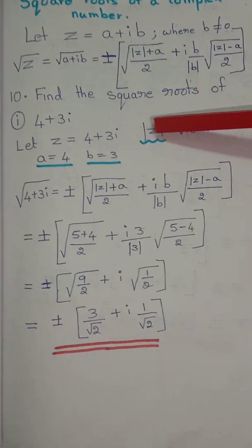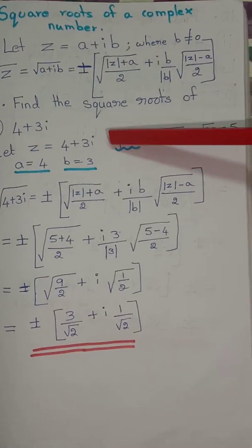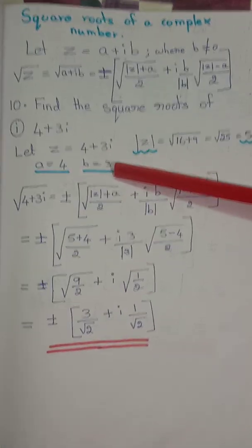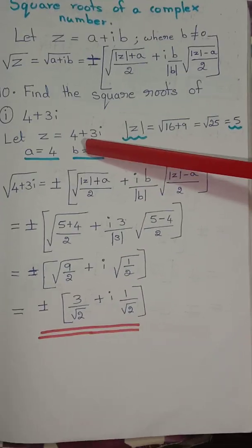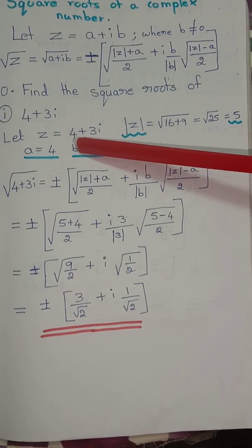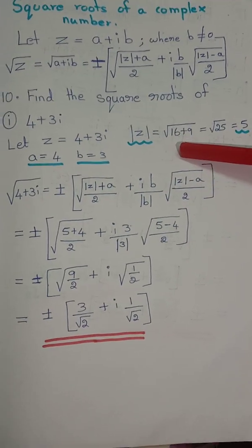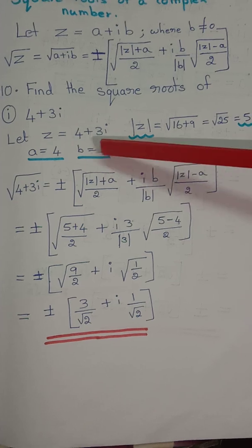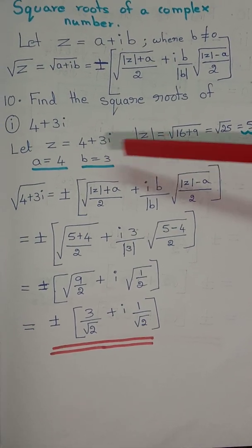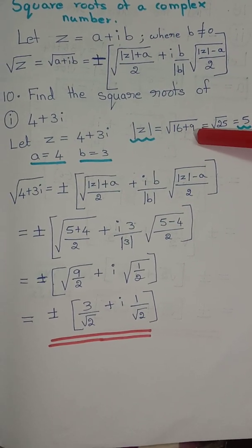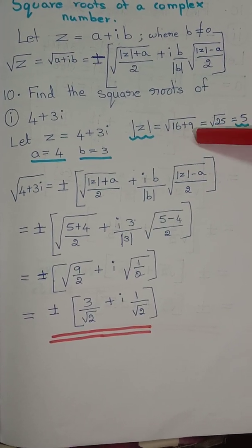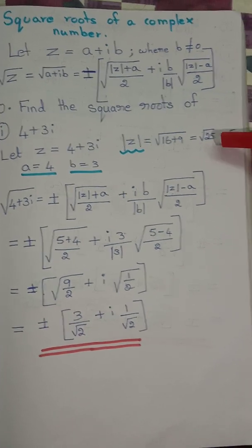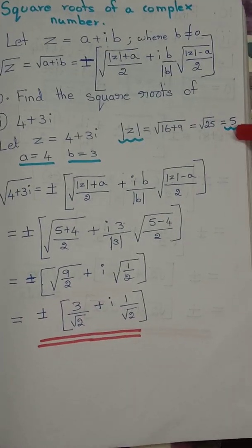The modulus of z: take the square root of the real number squared. Real number is 4, so 4 squared is 16. Imaginary number is 3, so 3 squared is 9. 16 plus 9 gives root of 25. Root of 25 is 5. So modulus of z is 5.